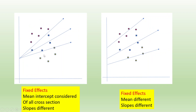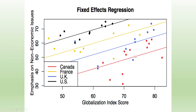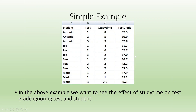The third model has the same intercept but different slopes. In the last case, both intercepts and slopes are different. Now let us take a very simple example. I want to study the effect of study time on the test grade, completely ignoring the student intelligence and the test. When running such a regression, it is known as pooled OLS — pooled ordinary least square method.